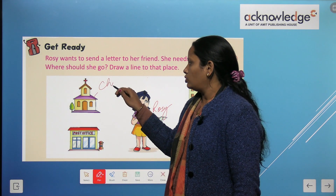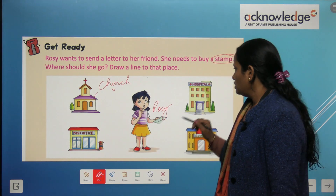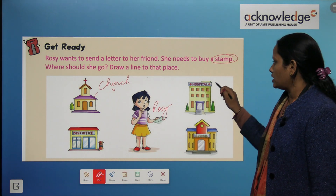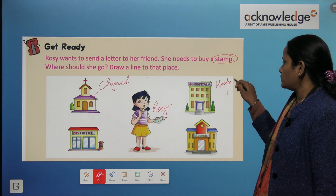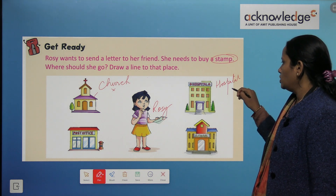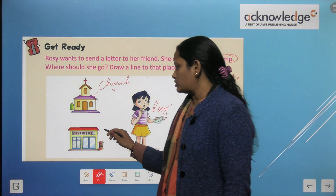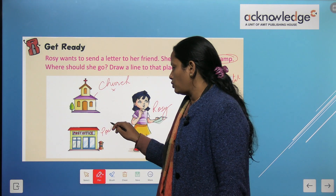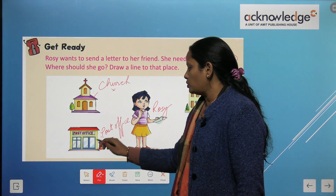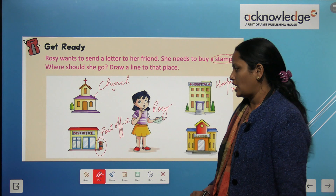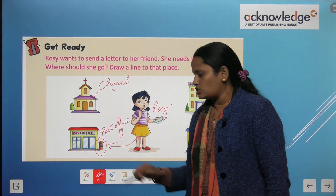The first picture is a church — should she go there? No. The second picture is a hospital — should she go there? No. The third picture is a post office. She wants to send a letter to her friend and she needs to buy a stamp, so yes, she should go to the post office.